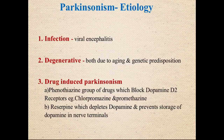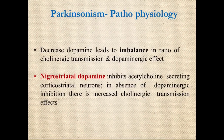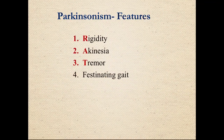In summary, parkinsonism involves degeneration of the substantia nigra and loss of dopamine, leading to increased inhibitory output of the basal ganglia. This causes hypokinetic features (from the direct pathway) and hyperkinetic features such as rigidity and tremor (from the cholinergic imbalance). The decreased dopamine leads to an imbalance between cholinergic and dopaminergic transmission, as nigrostriatal dopamine normally inhibits acetylcholine-secreting interneurons.